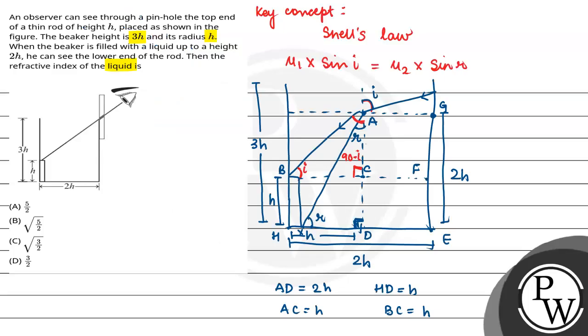So the correct option would be option number B, root 5 by 2. Hope you understood it well. Best of luck.